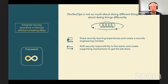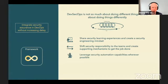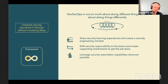If you expect teams to care about security and do certain things, you also need to give them the freedom to make meaningful decisions in that area — and that is often forgotten. You need to find ways to create supporting mechanisms for them to get the job done. They are not security experts; you cannot make a security expert out of everyone, because then you would have no developers and operations people left. Leverage security automation capabilities wherever you can.